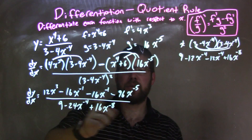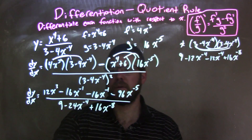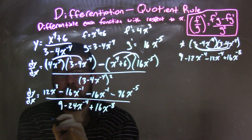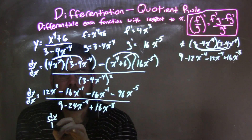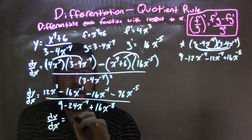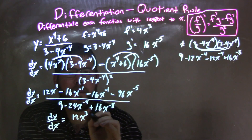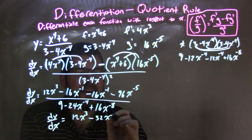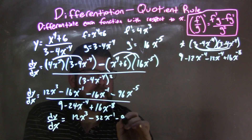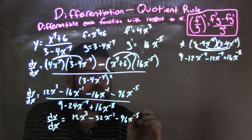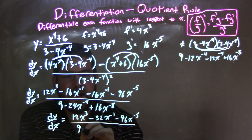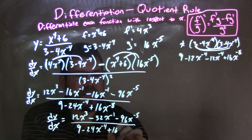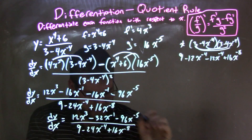At this point I can combine like terms. Combining the two negative 12 terms gives negative 24x to the negative 4th. So the denominator simplifies to 9 minus 24x to the negative 4th plus 16x to the negative 8th. And combining the x to the negative 1 terms in the numerator, we have dy/dx equals 12x to the 3rd minus 32x to the negative 1 minus 96x to the negative 5th, all over 9 minus 24x to the negative 4th plus 16x to the negative 8th.